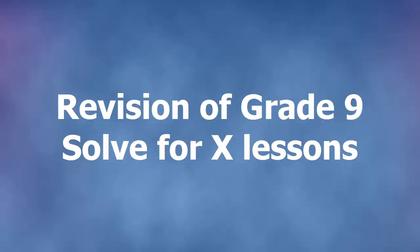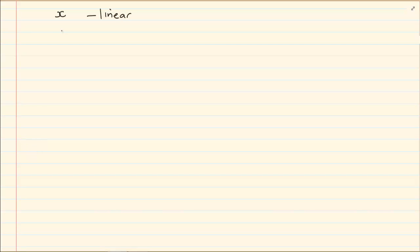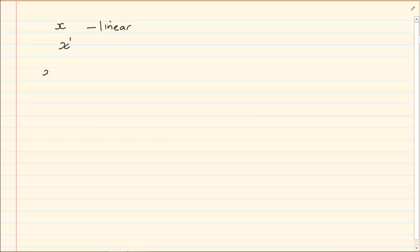Hi and welcome to my maths class. Today we're doing a revision on solving for x for all grade 9 equations. In grade 9 you only do linear equations. Linear means that you have x to the power of 1. The rule is to get the x on one side and the constants on the other side. Constants refers to whole numbers or any numbers that don't have x attached to them.